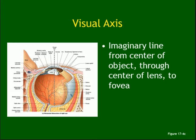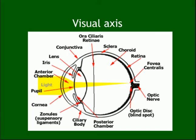The visual axis goes from the object to the center of the cornea, through the anterior chamber, through the pupil, then the lens, then the vitreous humor, and the end point is the fovea. If the image converges anterior to the fovea, that is near-sightedness — myopia. If it goes behind, that is far-sightedness — hypermetropia. These are important concepts.